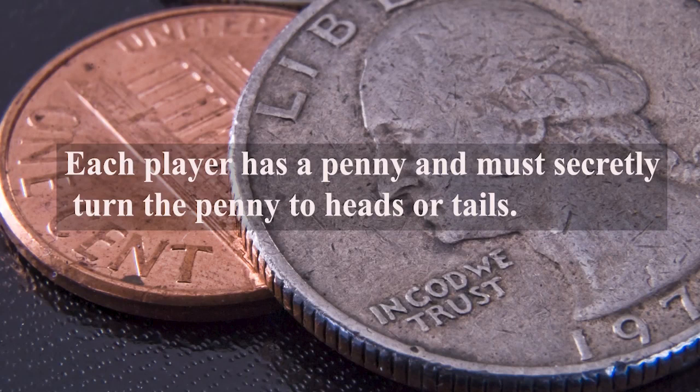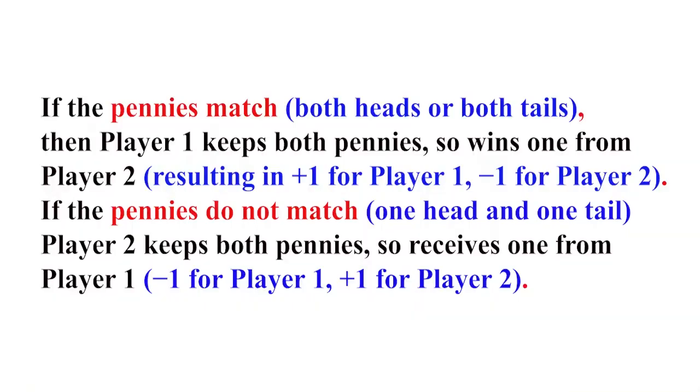Each player has a penny and must secretly turn the penny to heads or tails. The players then reveal their choices simultaneously. If the pennies match, both heads or tails, then player 1 keeps both pennies, wins 1 from player 2, resulting in +1 for player 1 and -1 for player 2. If the pennies do not match, one head and one tail, player 2 keeps both pennies, so receives one from player 1, that is -1 for player 1 and +1 for player 2.